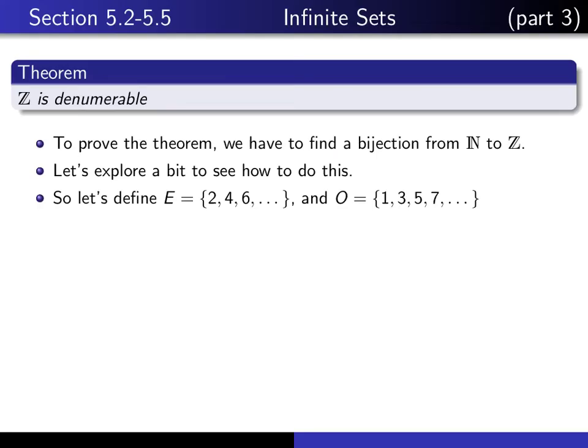What we discovered is we should define E to be all the even natural numbers, O all the odd natural numbers, and then E and N, E has the same cardinality as N, because this function, given by x goes to x over 2, seems to be a bijection. That's what we discovered on the previous slide.